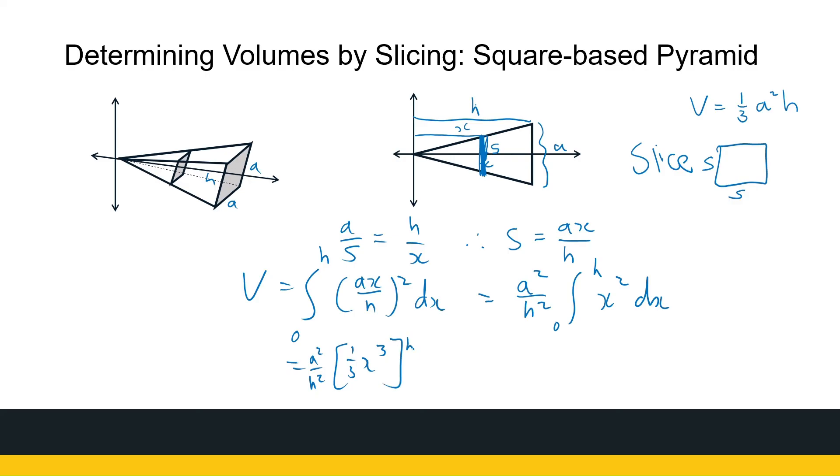So that's a²/h² times h³/3, which gives us (1/3)a²h. And that's what we wanted to get. So that's the volume of a square-based pyramid.